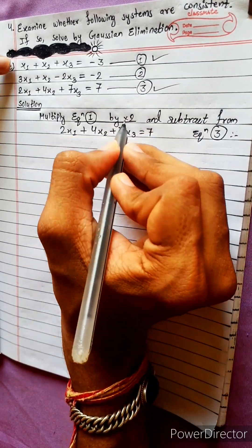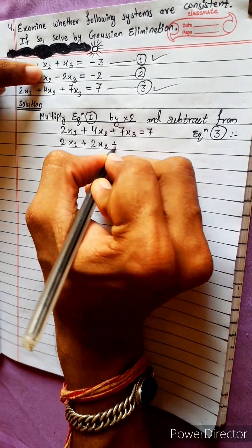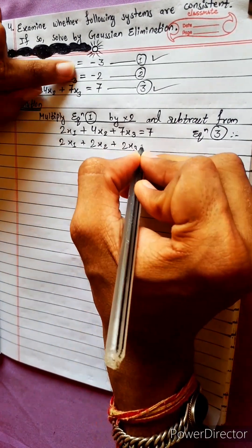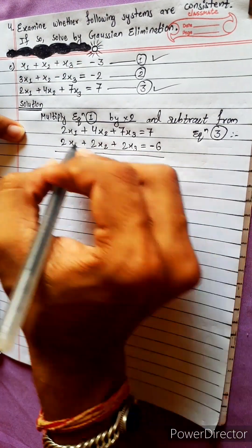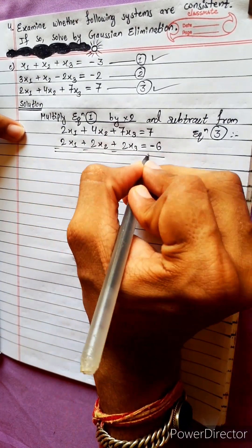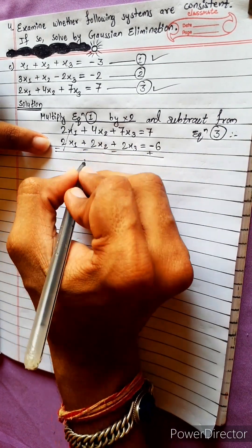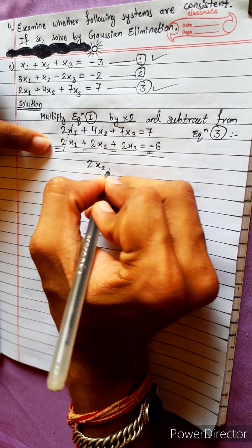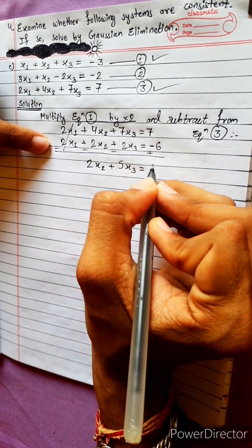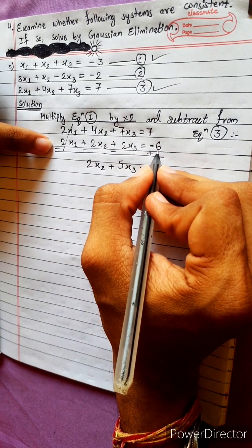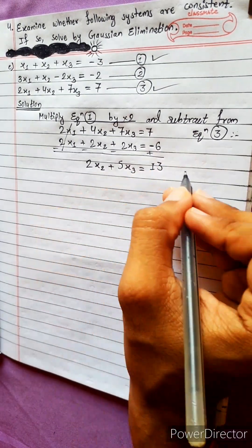Equation 1 multiplied by 2 gives: 2x1 plus 2x2 plus 2x3 equals minus 6. After subtraction, the x1 terms cancel. We get 4 minus 2 equals 2x2, and 7 minus 2 equals 5x3, and 7 plus 6 equals 13. So equation 4 is: 2x2 plus 5x3 equals 13.